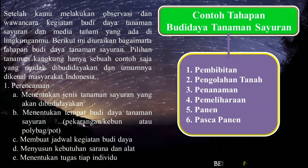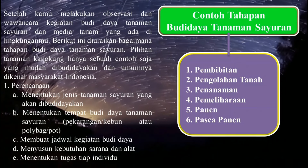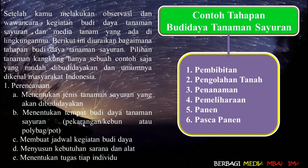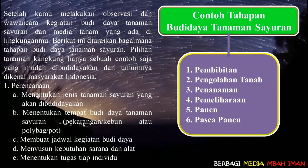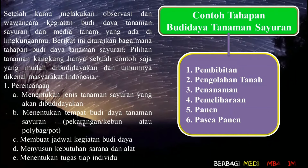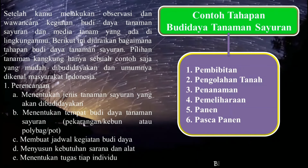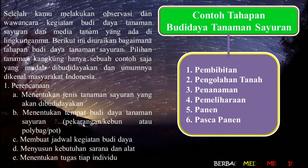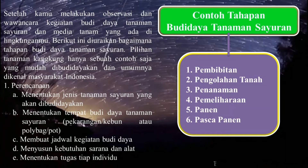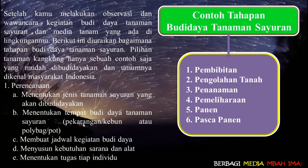Perencanaan meliputi: menentukan jenis tanaman sayuran yang akan dibudidayakan, kemudian menentukan tempat budidaya tanaman sayuran, bisa di pekarangan, kebun, polybag, atau pot. Selanjutnya membuat jadwal kegiatan budidaya dan menyusun kebutuhan sarana, alat dan bahan. Jangan lupa didokumentasikan.